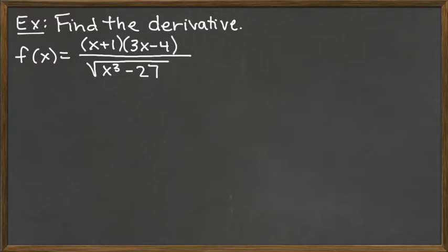And as the function is written right now, we have a product rule for the top part, we have a quotient rule as the entire thing, and we have a chain rule for the bottom part.